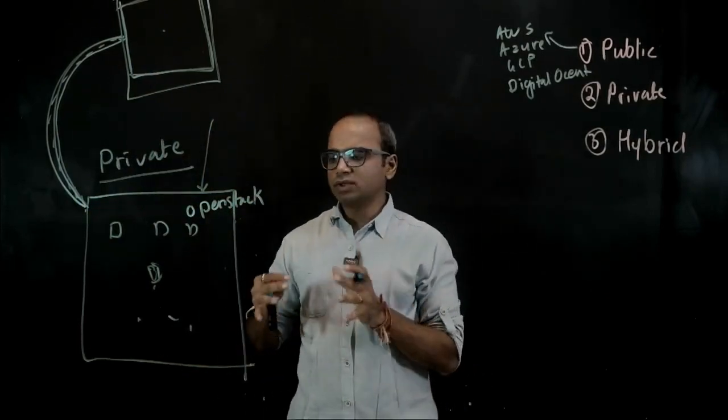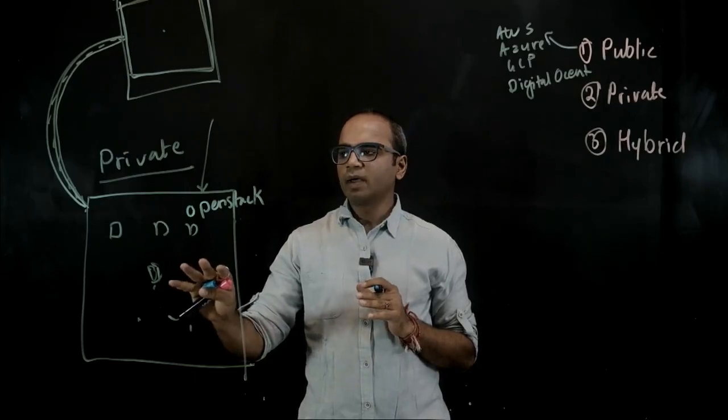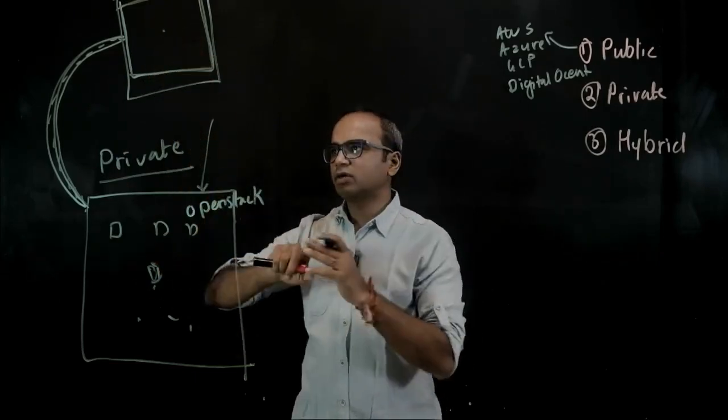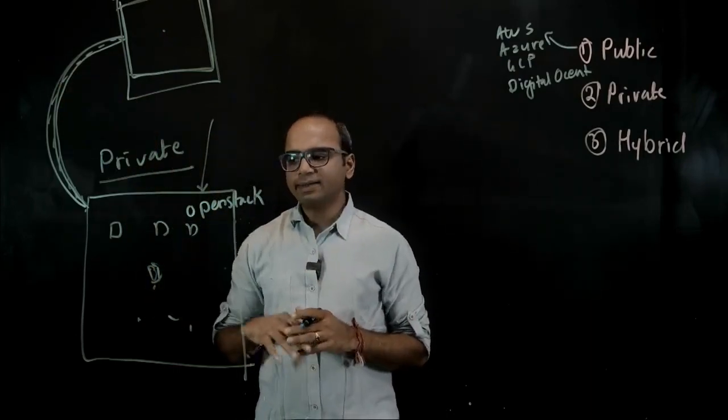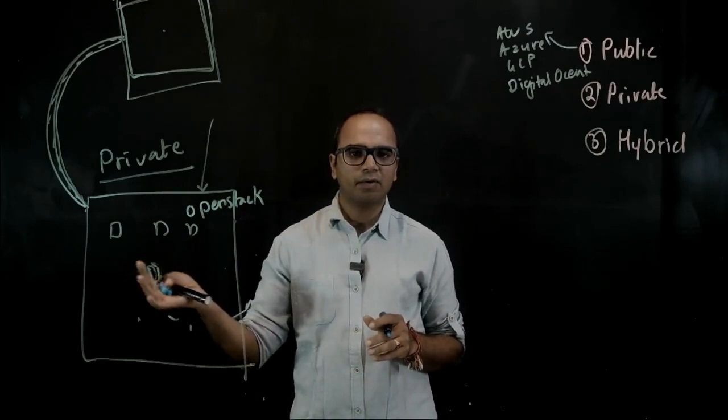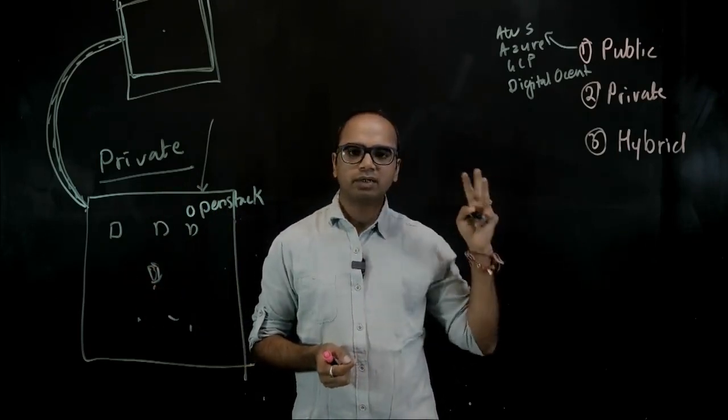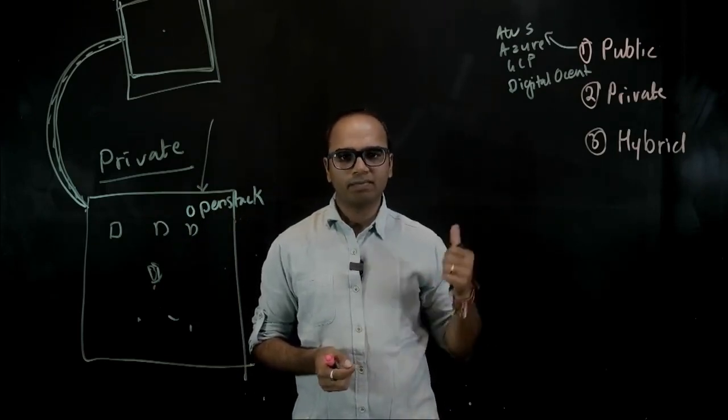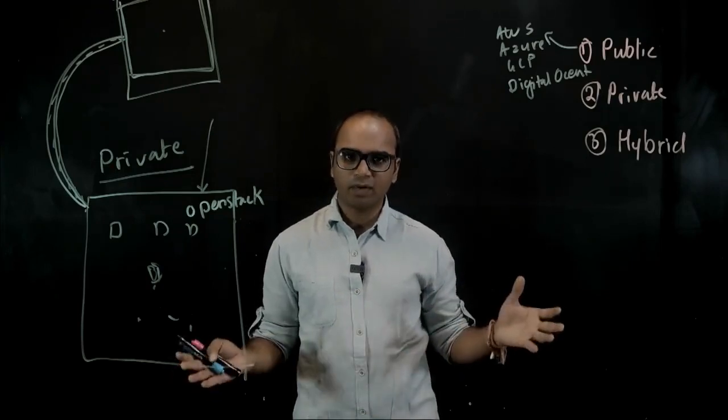So if you see a deployment where you have the private cloud and then there is also a public cloud in play, in use, or there could be multiple public clouds which are being used as well, this is a hybrid cloud model. So as I just mentioned, we just talked about the three types of clouds based on the deployment model, which is the public cloud, private cloud, and the hybrid one.